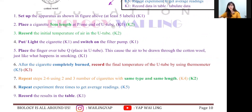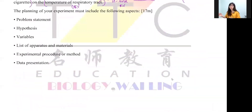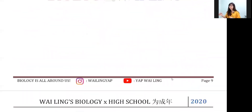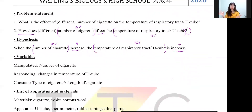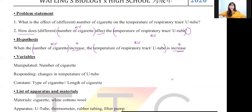That's Paper 3 Section B. Try to apply this technique to all questions and you'll realize it's not hard to score. You should aim for 50 out of 50, or at least 45 marks and above — it's very achievable. If you have any questions, comment below. Please like, comment, and share. See you guys in the next video, bye!